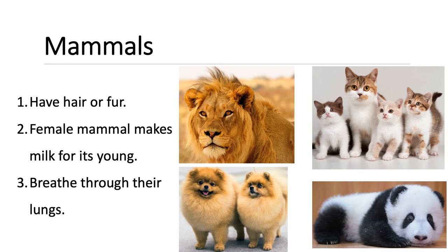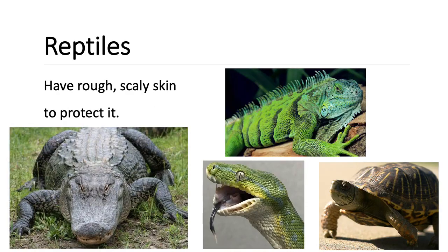This is a lion. A lion is a mammal, which is an animal with a backbone. A lion has hair and breathes through its lungs. Reptiles: a reptile is an animal with a backbone that has rough, scaly skin to protect it.